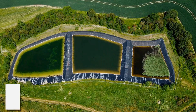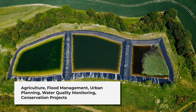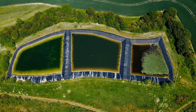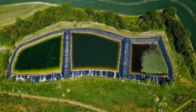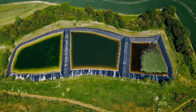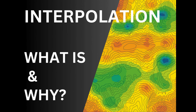A few examples: in agriculture, optimize irrigation and control soil erosion. Flood management: identify vulnerable zones before disaster strikes. Urban planning: design drainage systems and green spaces. Water quality monitoring: track pollutants and plan wastewater treatment. Conservation projects: protect forests, wetlands, and river ecosystems. If you're exploring GIS resources for the first time, you'll love our video on interpolation — what it is and how it works in GIS. Check it out; the link is in the iButton and in the description.